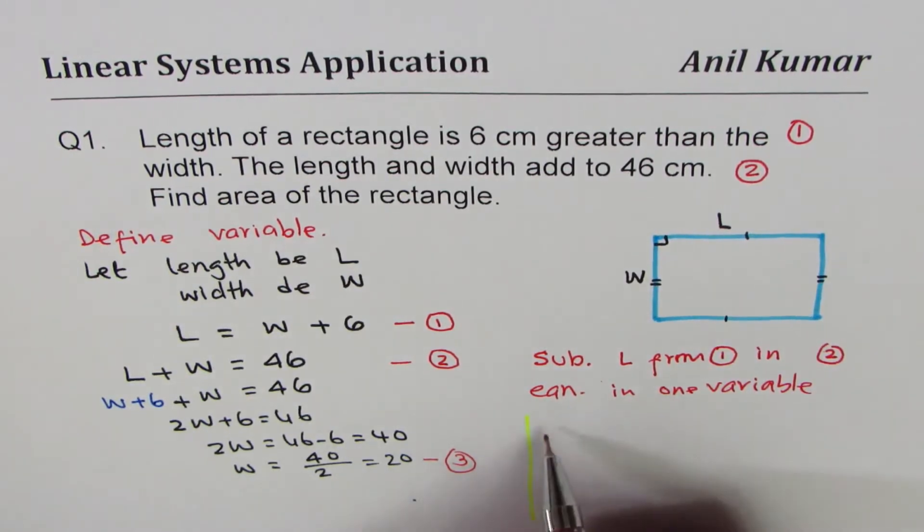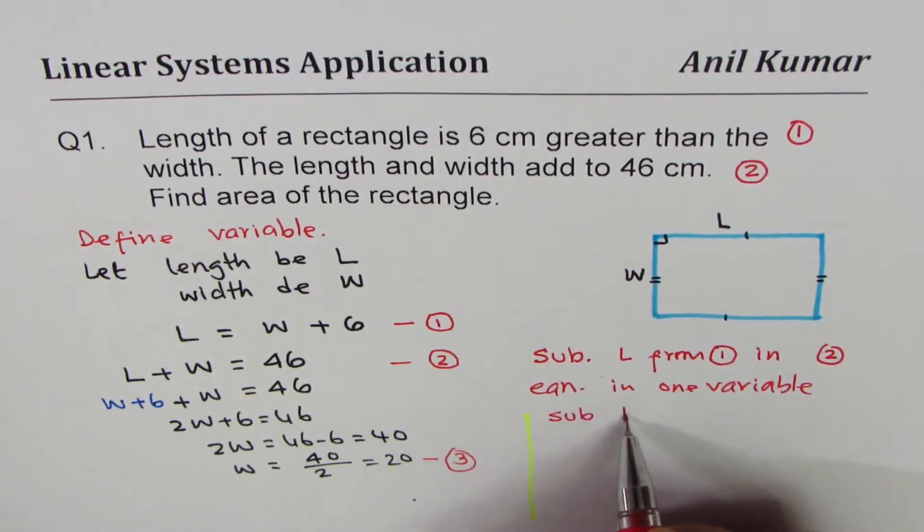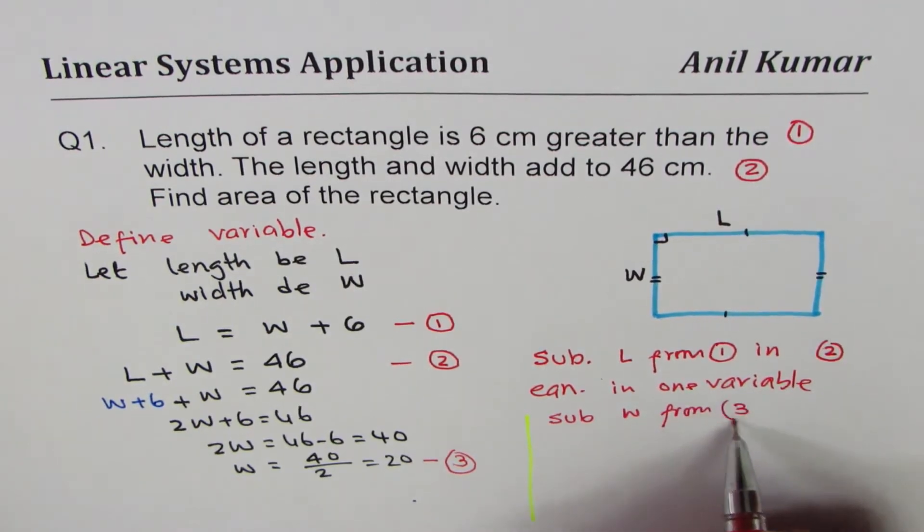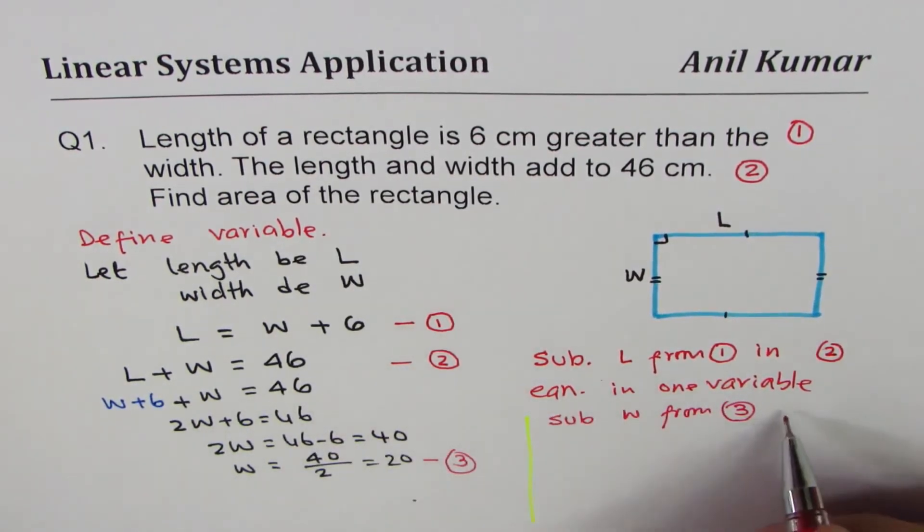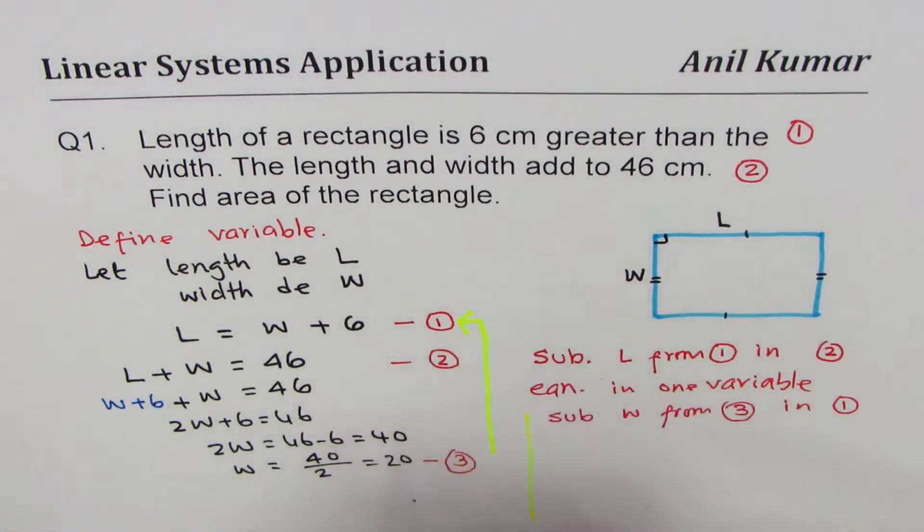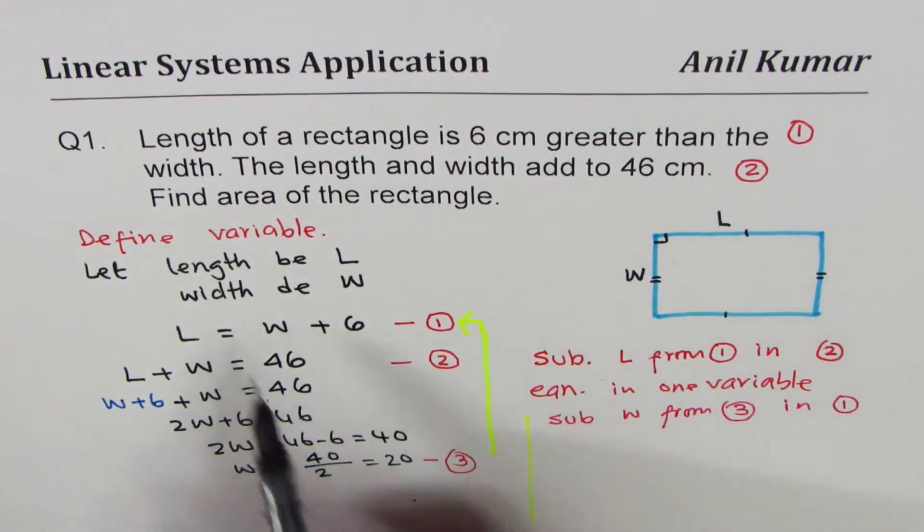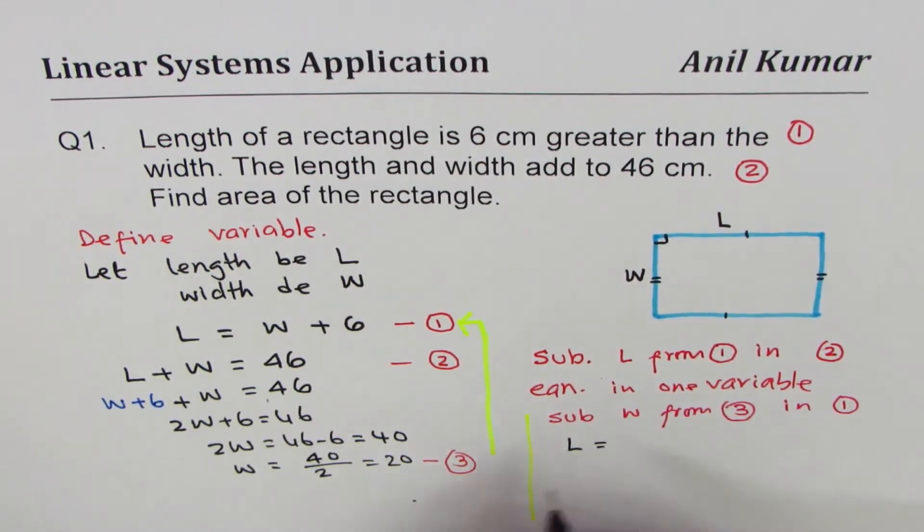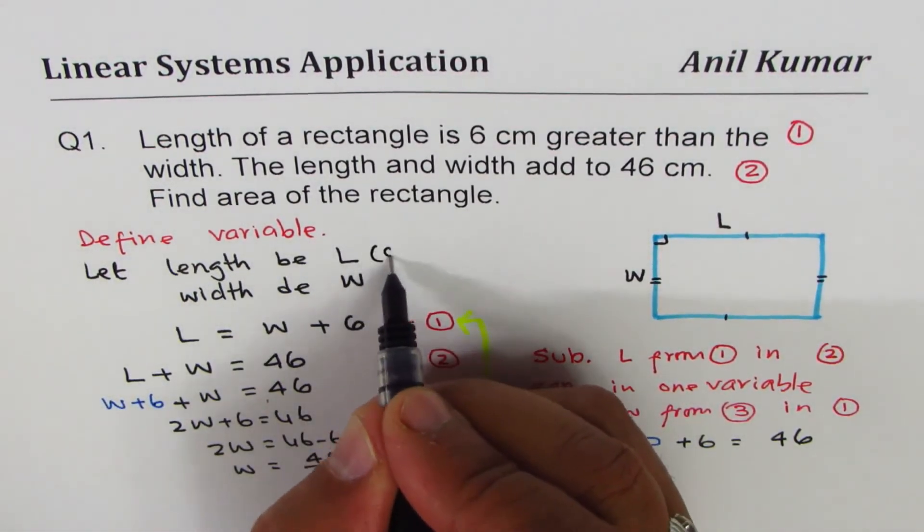To find length we'll substitute W from equation 3 into equation 1. So getting back to length, we can write down length equals to instead of W, I'm writing 20 plus 6, which is 26.